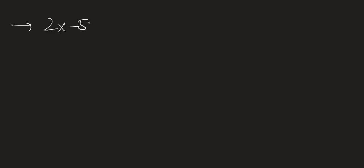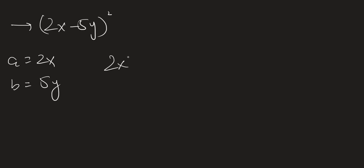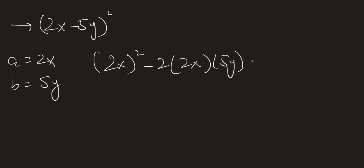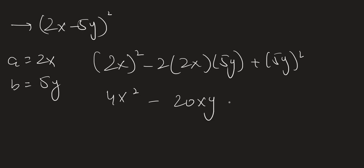Another example is 2x minus 5y whole square. Our a is 2x and our b is 5y. So we get 2x whole square minus 2 times 2x times 5y plus 5y whole square. This expands to 4x squared minus 20xy plus 25y squared.